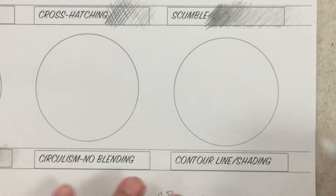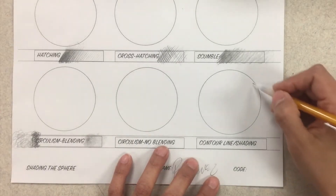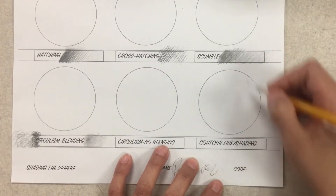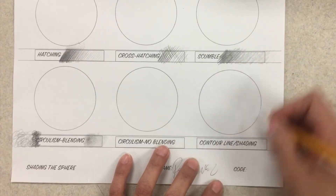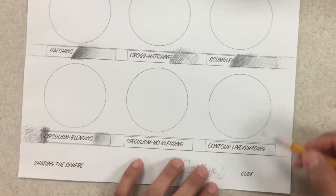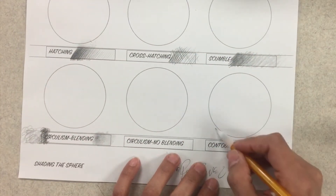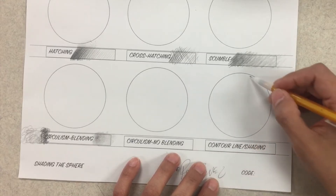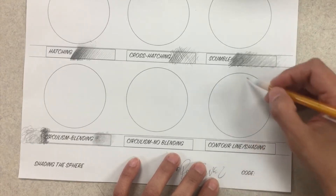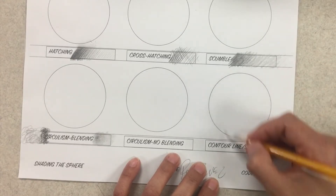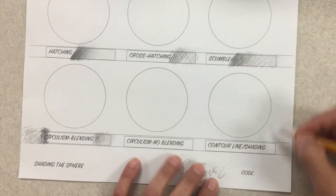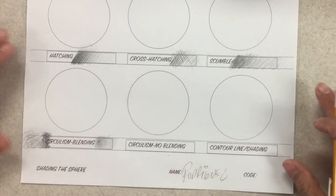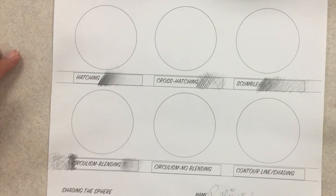Contour line shading means I'm going to follow the curve of the sphere. You'll most likely see me following the curve no matter what technique I'm doing, but the directional lines will go over all sections of the sphere to continuously reemphasize the 3D appearance of the ball or sphere.